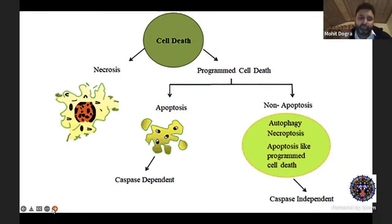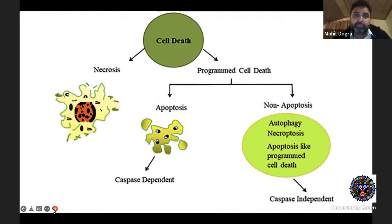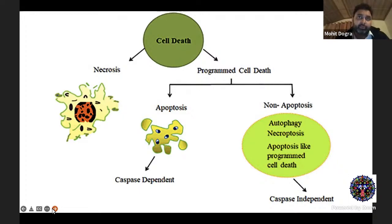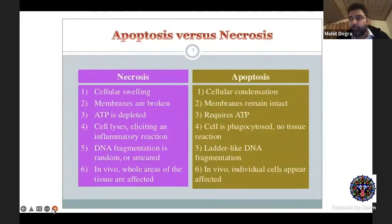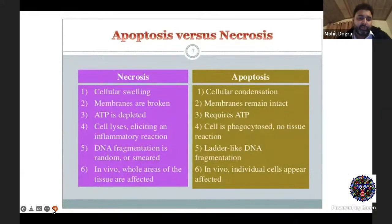You can also have non-apoptotic programmed cell death pathways — autophagy, necroptosis, apoptosis-like programmed cell death. I'm not going to get into that. I'm going to talk about necrosis and apoptosis, the differences between the two, and how these would manifest clinically in a retinal injury scenario. This is the last of my slides from SlideShare. We're not biochemists, we're not microbiologists, and we might not understand a lot of the things in this slide, but just a few points.